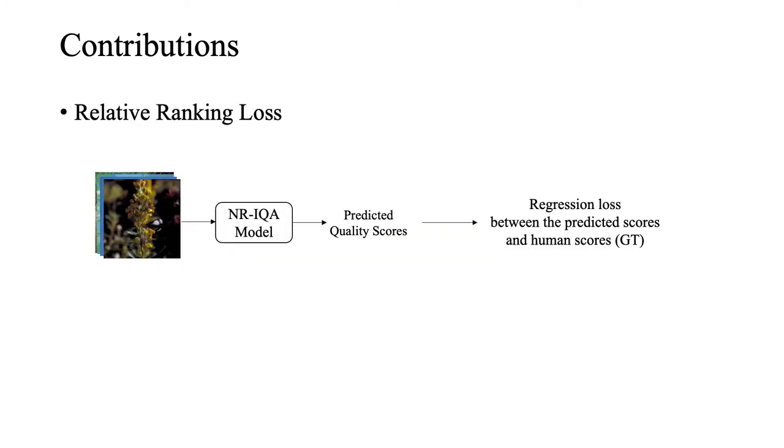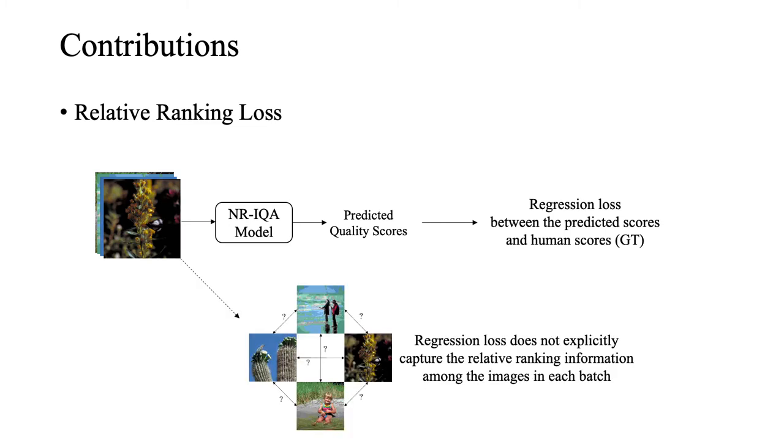Due to the absence of the original reference image and only the availability of human subjective scores, most NRIQA methods address the quality assessment problem as a regression problem, where the main objective is to optimize the model to reduce the regression loss during training. This causes the model to not be able to use the relative ranking between images explicitly. We propose a relative ranking loss that explicitly enforces the monotonicity correlation among the samples within each batch.